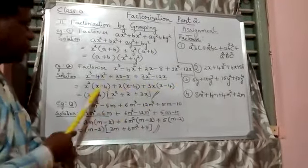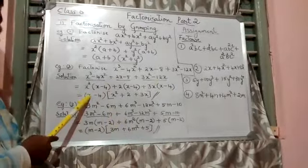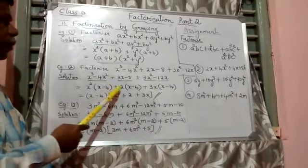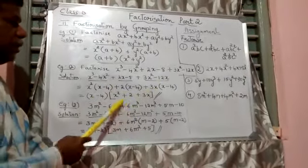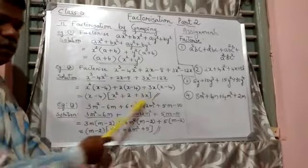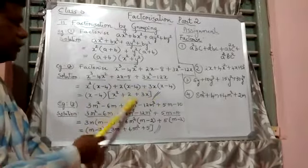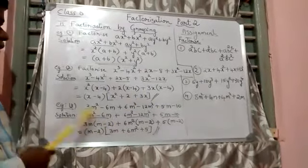In all the three terms, x minus 4 is common. Take it out. What remains is x² plus 2 plus 3x, which is written as the second factor. So this is the answer to the second example.